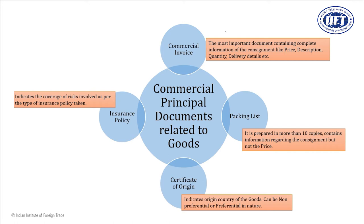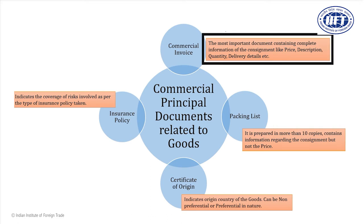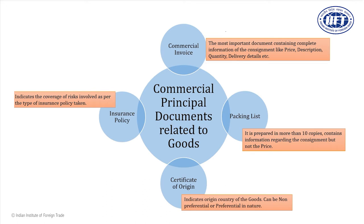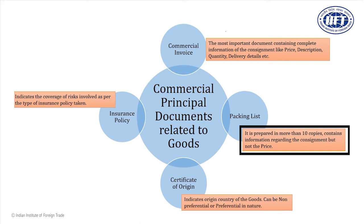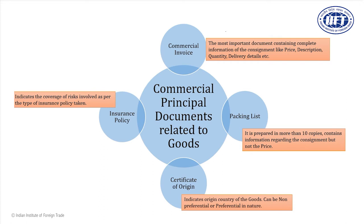What is the difference between commercial invoice and packing list? The commercial invoice mentions all information related to the consignment — price, quantity, delivery, etc. Whereas the packing list contains all information regarding the consignment similar to the invoice, but not the price. The packing list is prepared in a large number of copies because an exporter has no threat of competition even if it goes to a competitor — when the price is not there, the consignment is safe. So the packing list may be handed over to a number of stakeholders compared to the invoice.